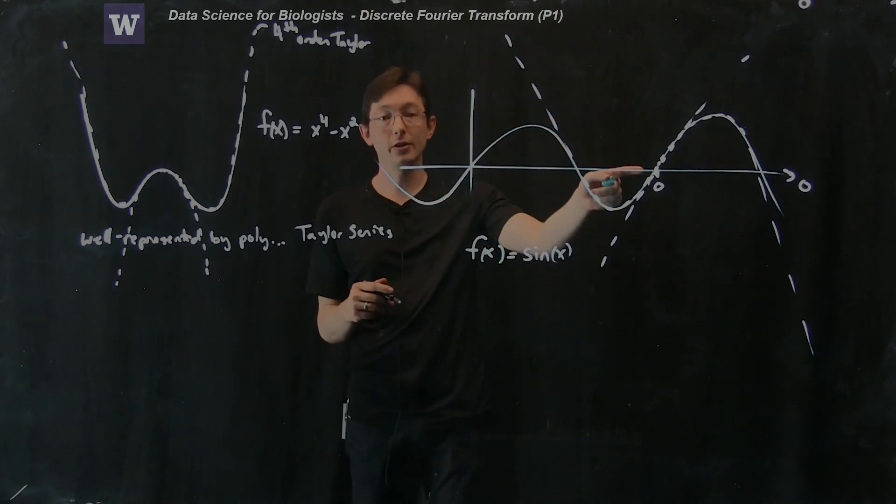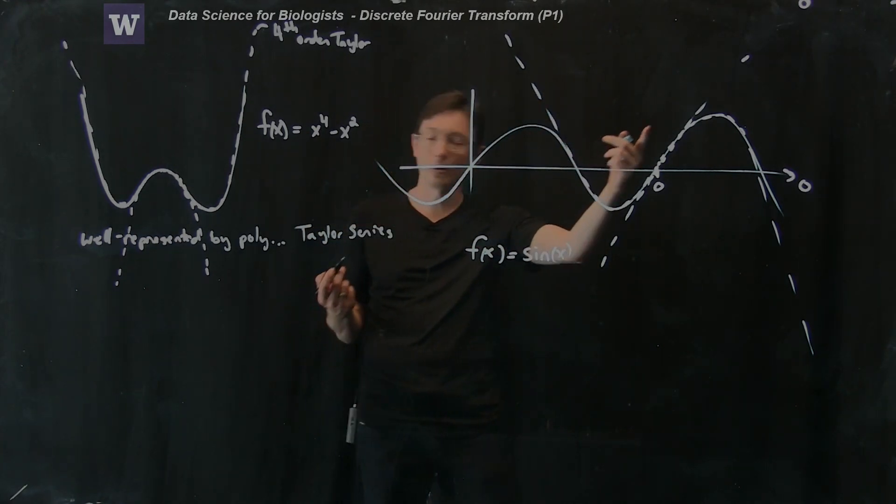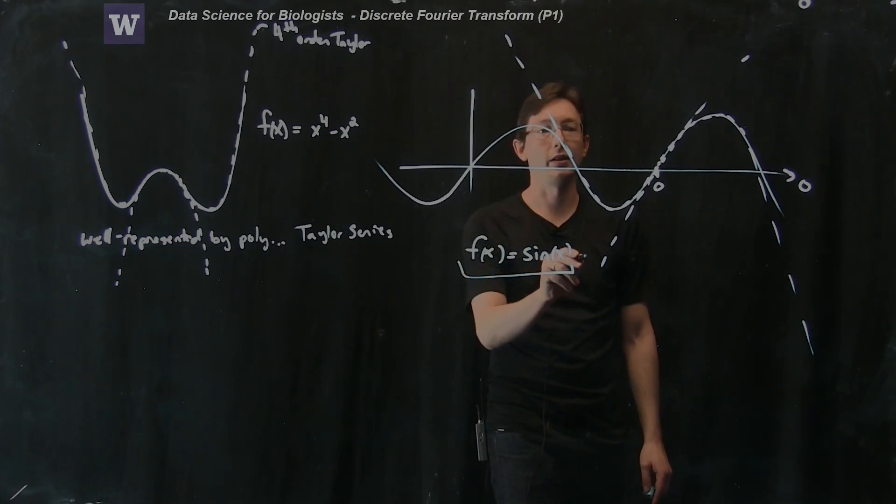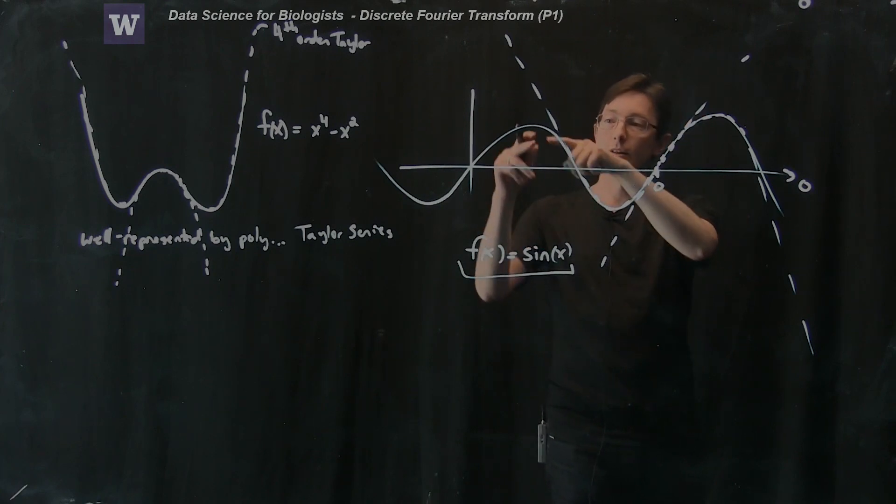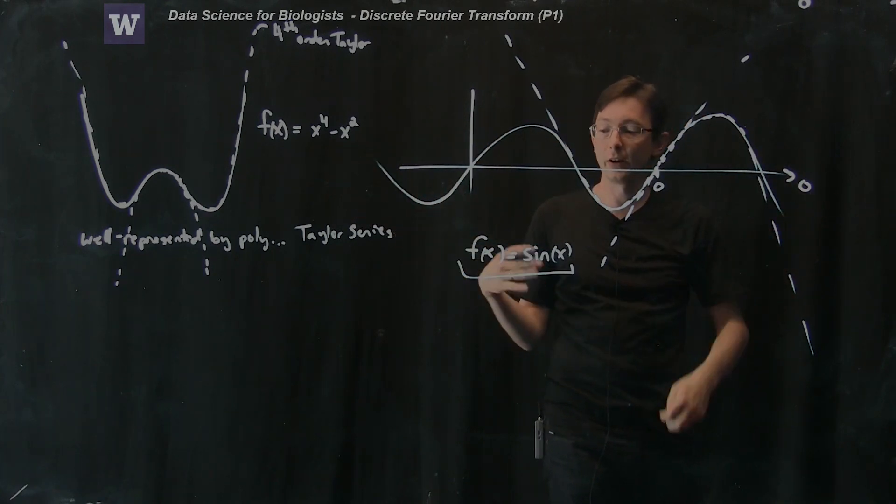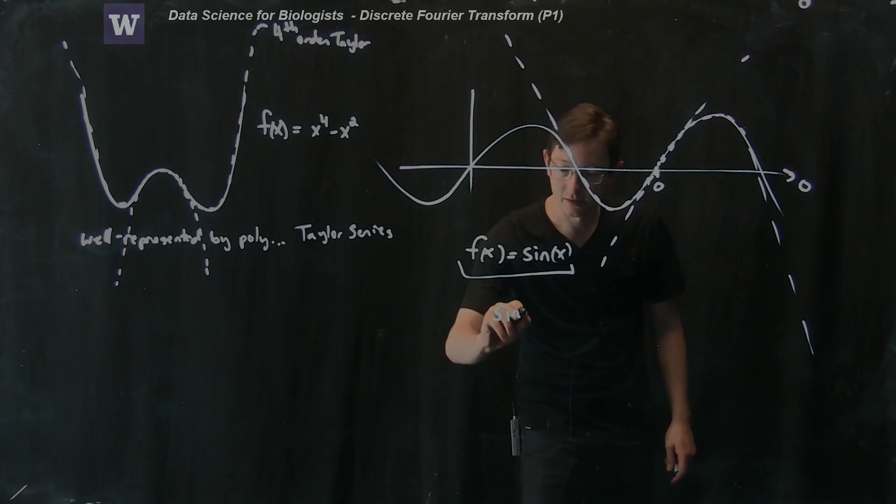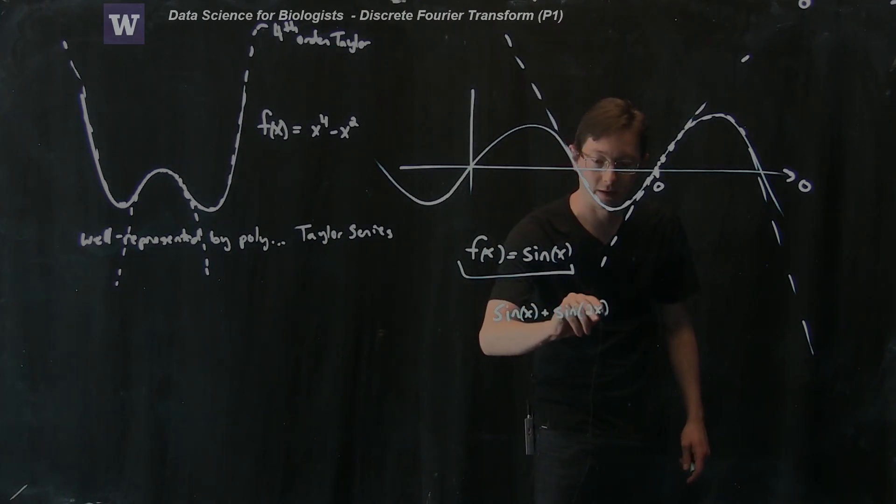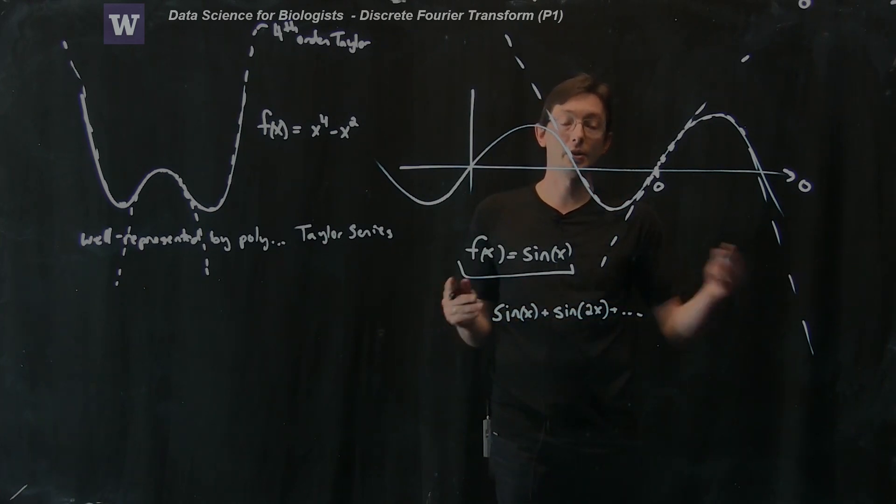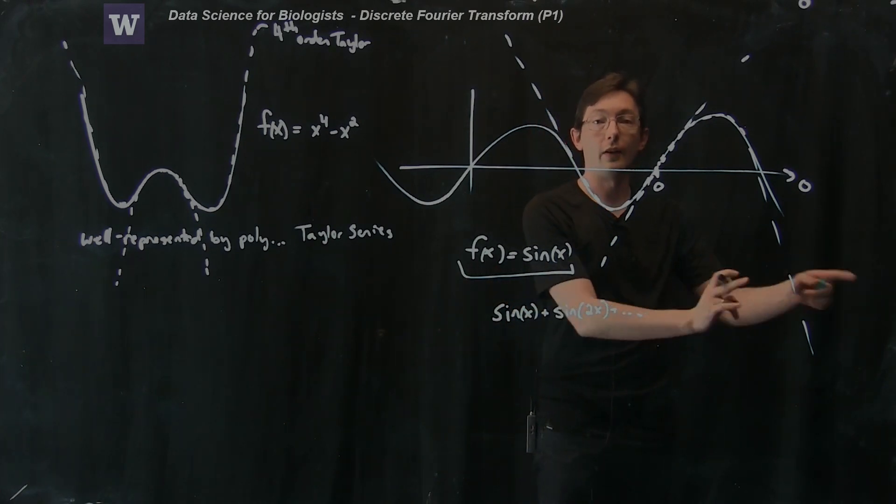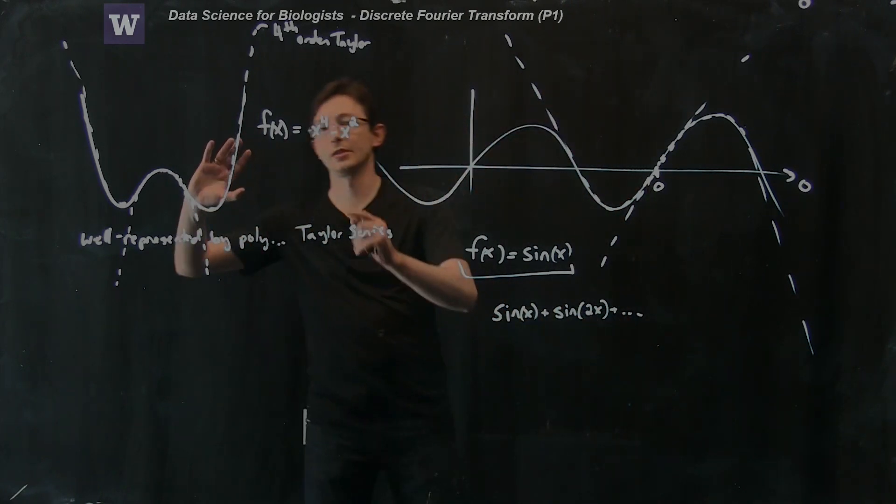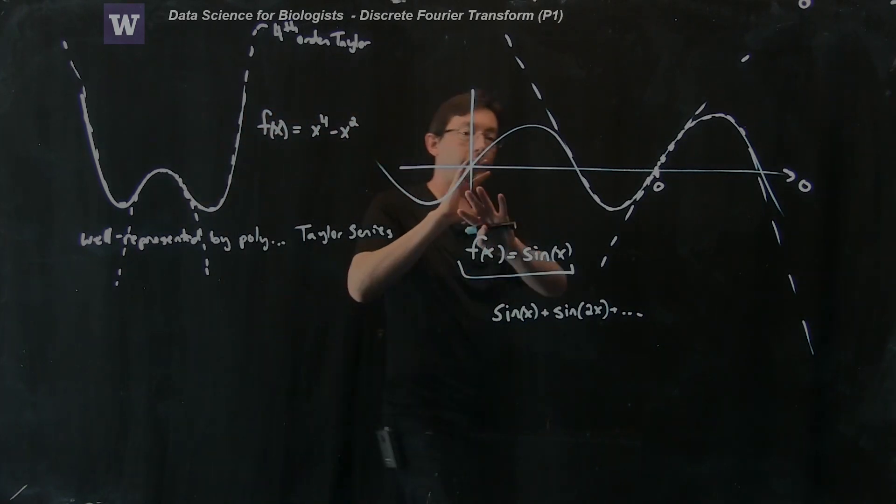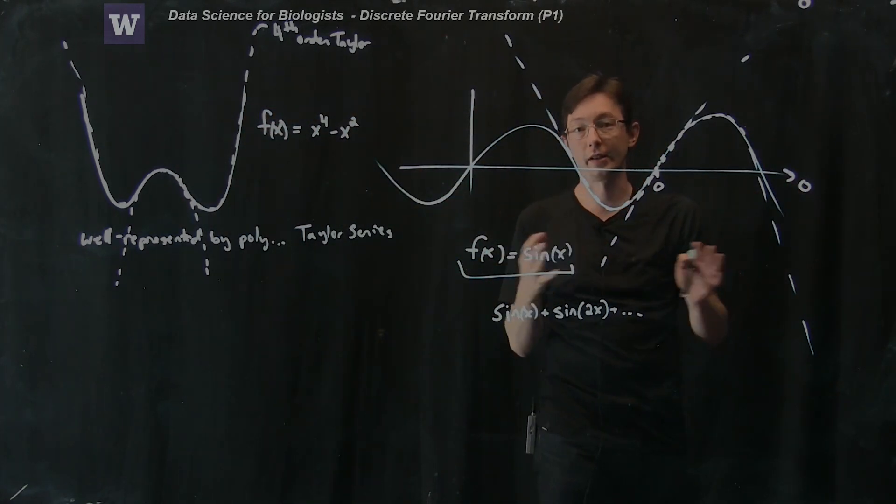And instead, what we're going to do is approximate functions like this using sines and cosines. So this one's perfect. This is just a sine. This function is sine of x. So I only need one sine to represent this function. Other functions I might have to write as sine of x plus another sine of 2x and so on and so forth. And I can expand functions in terms of sines of higher and higher frequencies. So these are kind of our two options. We have the Taylor series, which is a polynomial expansion, and we have a Fourier series, which is a sine and cosine expansion.